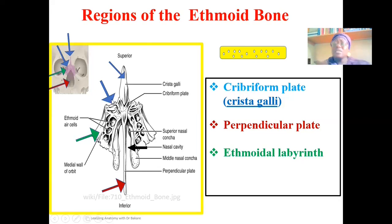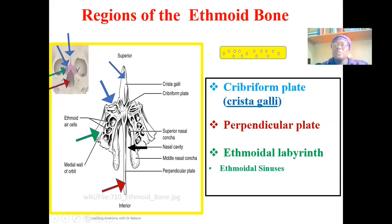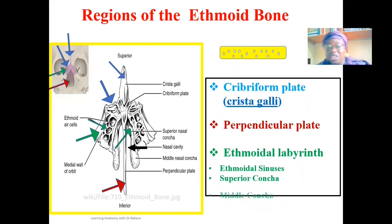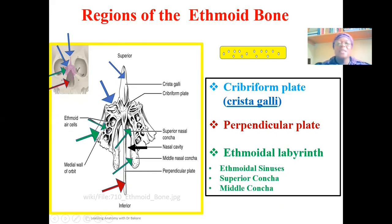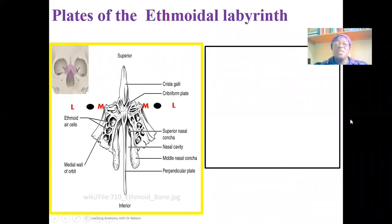Let's look at the sub-regions of the ethmoidal labyrinth. Within the ethmoidal labyrinth, we have the ethmoidal sinuses, which are actually located within the ethmoidal labyrinth. Then we also have the superior concha and the middle concha. So within the ethmoidal labyrinth, we have a number of sub-regions: the ethmoidal sinuses, which are air spaces created within the ethmoidal labyrinth, and projections referred to as conchae.